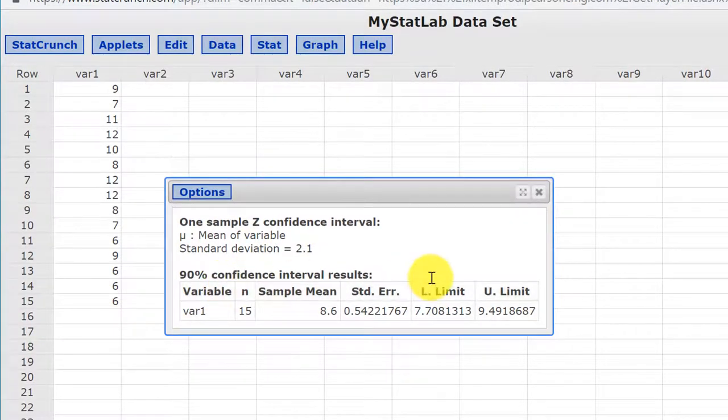90% confidence interval for the mean. There's the sample mean, 8.6. There's the standard error, which we don't have to calculate—StatCrunch does it for us—and a lower limit of 7.7, upper limit of 9.49. Now, they say round to one decimal, so that would be 7.7 and 9.5.